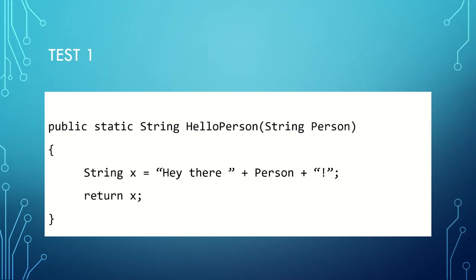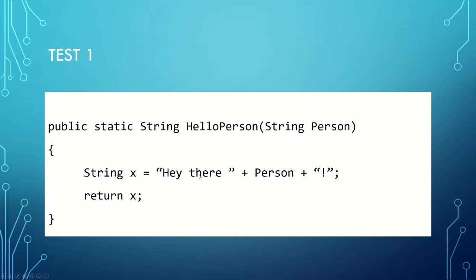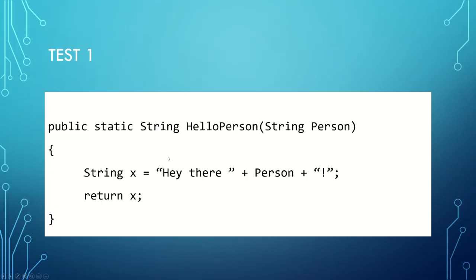We've got public static String helloPerson, and I've created a string called x and I've concatenated three strings together: 'Hey, there' with that space - it's absolutely critical you have that space, otherwise it will be wrong - and I'm adding our variable person of type string. So we had Jerry in our example above, and it would be 'hey there space Jerry exclamation mark' exactly as it is here. And that is how I do it.